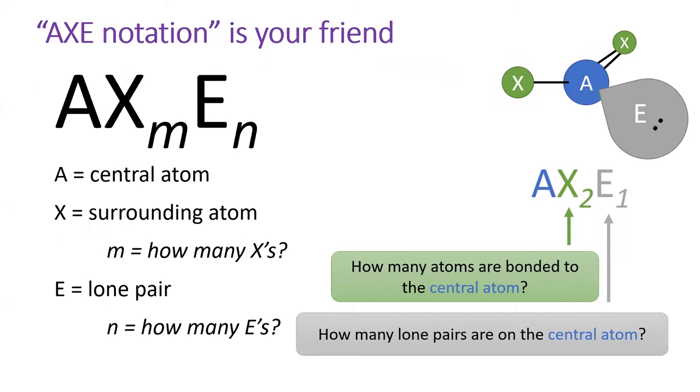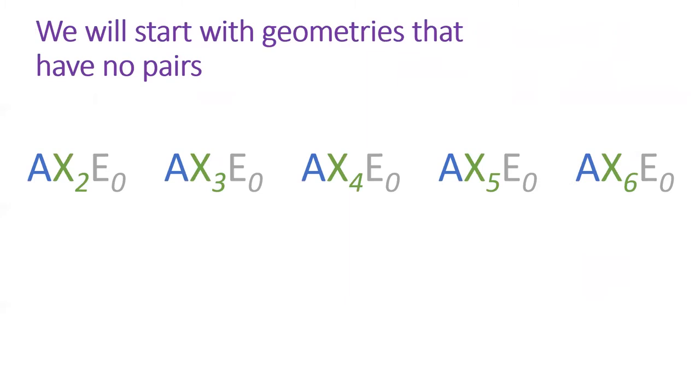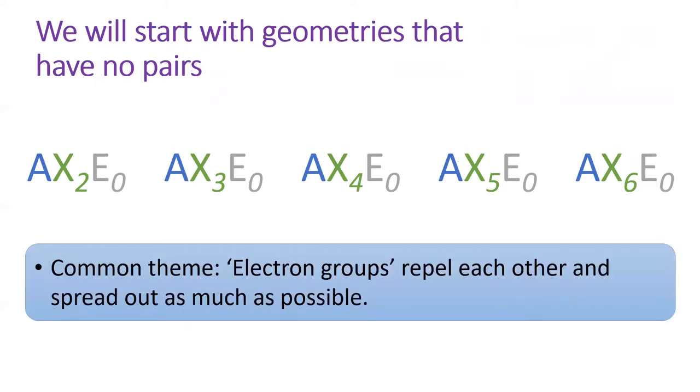We'll find X notation incredibly useful since each unique X combination directly corresponds to its molecular geometry. We will start with geometries that do not have any lone pairs. In X notation, these are the ones with E equals 0. Throughout every shape, keep in mind that the electrons forming the covalent bonds are negatively charged, and therefore they will try to be as far apart from the other electron groups as possible.